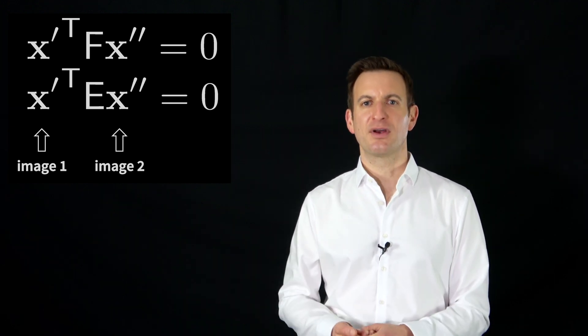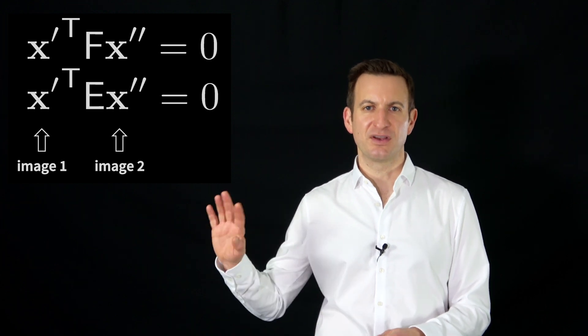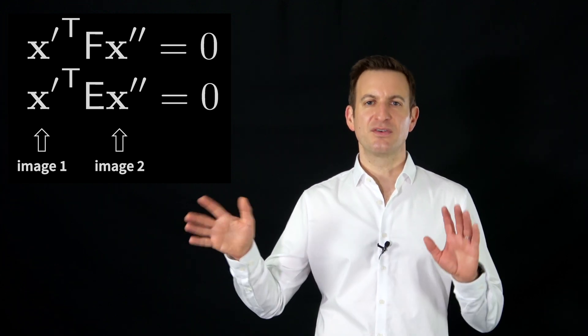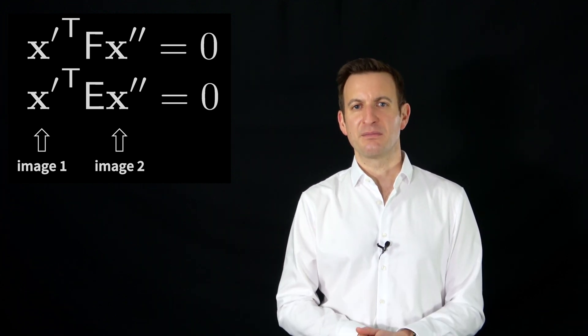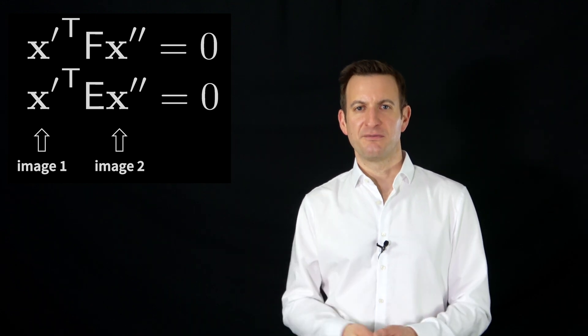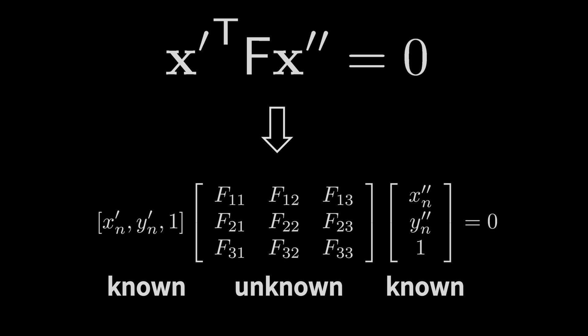Depending on how you parameterize your fundamental matrix or essential matrix, it may be the other way around — it depends a little bit on your notation, but this is the photogrammetric notation I'm using here. So x prime and x double prime are all knowns — these are the corresponding points that we are supposed to know. And what we want to do is determine F or E, the fundamental matrix or essential matrix, in order to get the relative orientation parameters.